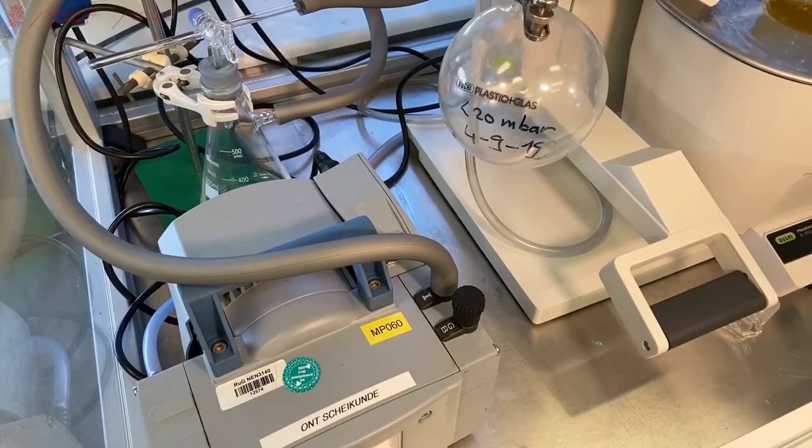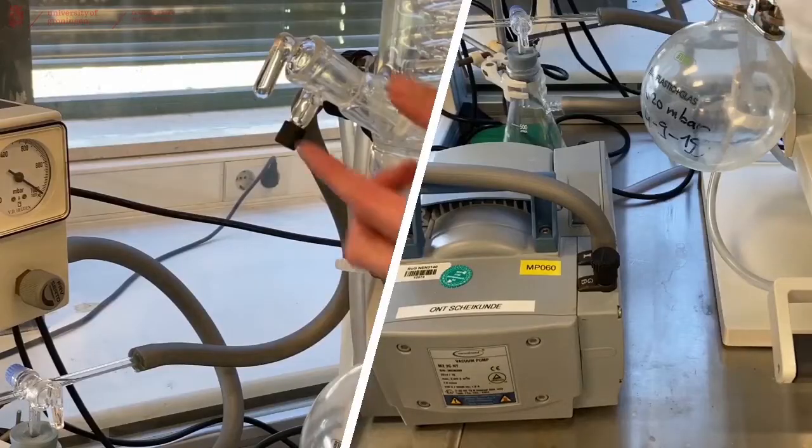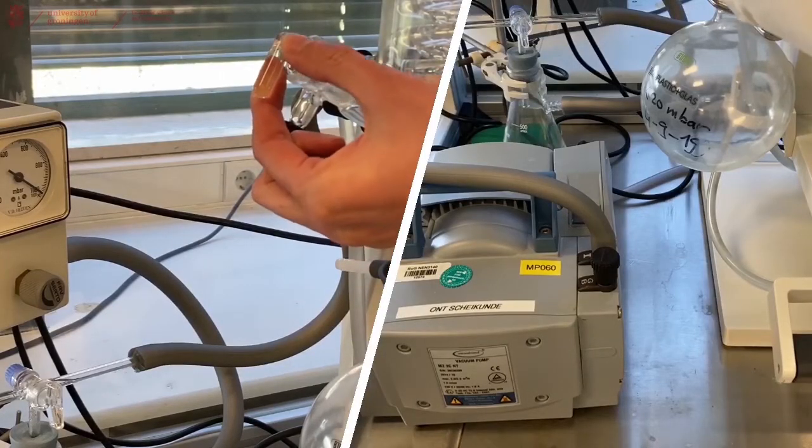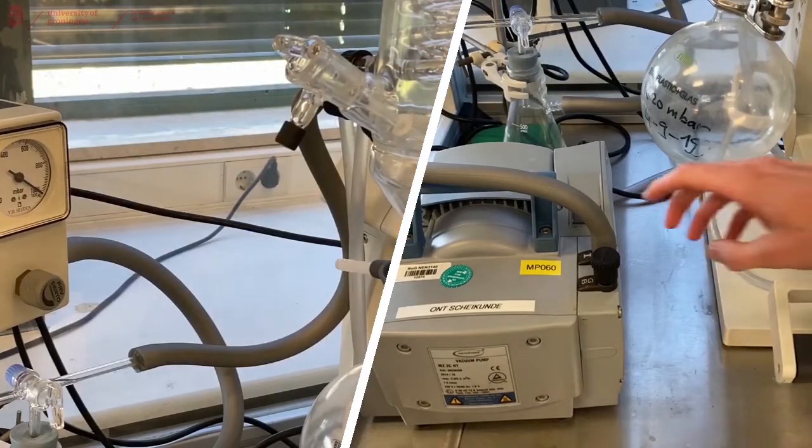40 degrees might not be enough to actually evaporate your solvent. So to make this machine go faster, we apply a light vacuum. Start by closing the tap all the way on the left hand side of the Rotary Evaporator. And then you can turn on the pump.